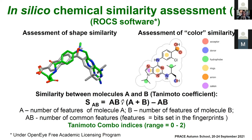Shape correspondence and correspondence in surface properties is done by so-called color similarity — identification of functional groups, atoms, and substructures capable of performing similar intermolecular interactions: acceptor, donor, hydrophobic, aromatic, ionic, and so on. The similarity is estimated using the Tanimoto coefficient. The Tanimoto combo coefficient combines shape and color similarity together, ranging from 0 (no similarity) to 2 (full similarity).